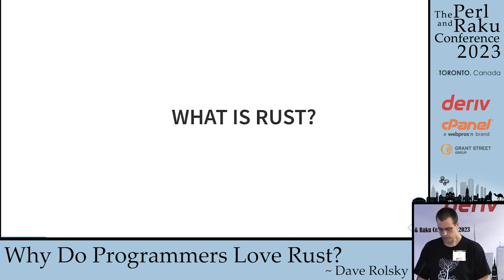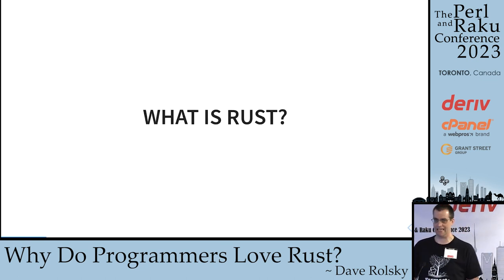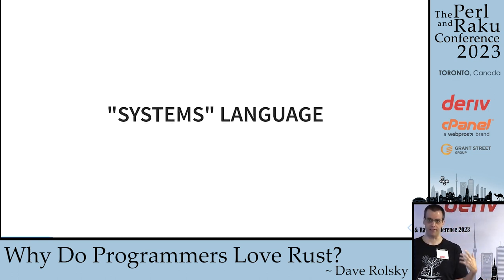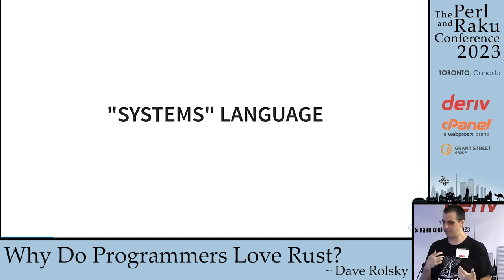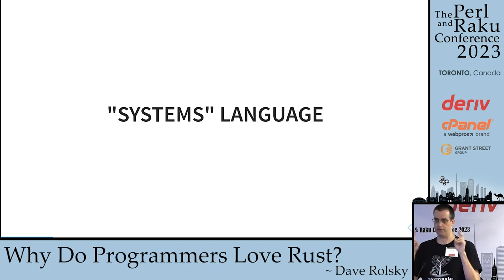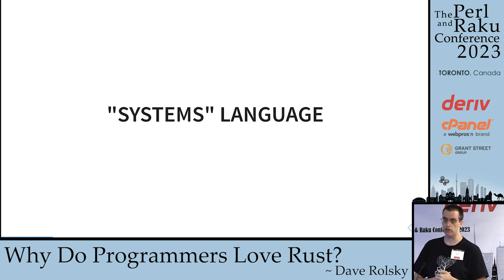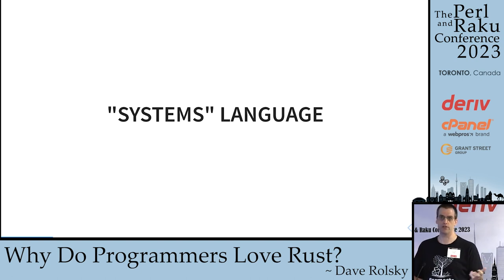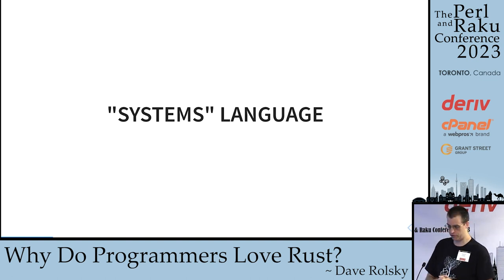So let's first talk about what Rust is. Obviously it's a programming language, but a little more detail. It's often referred to as a systems language, but I've seen it used for all sorts of stuff. It certainly gets used for systems cases — writing low-level things, writing daemons. There is now Rust support in the Linux kernel, so you can write Linux modules in Rust, and I think some of the initial work has been merged.